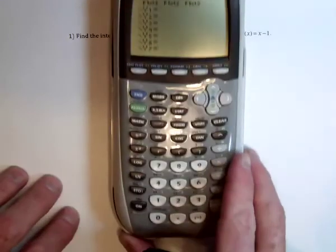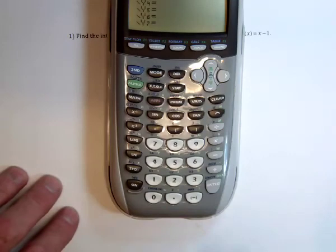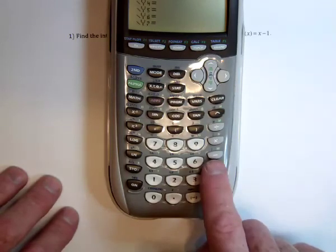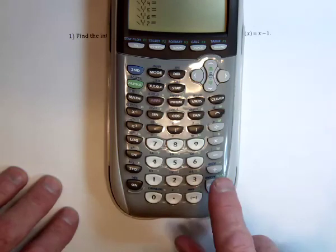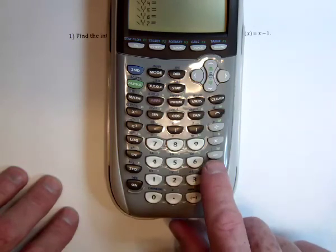On the graphing calculator there is a distinction between the negative sign and subtraction. So if you have a negative number, just a single negative number like negative x squared, use this. If you're subtracting two numbers like 5 minus 3, then use this.